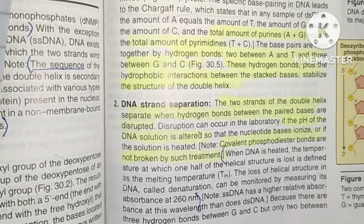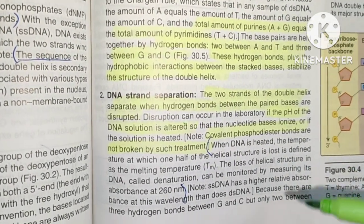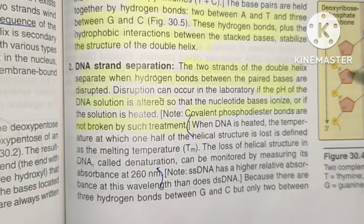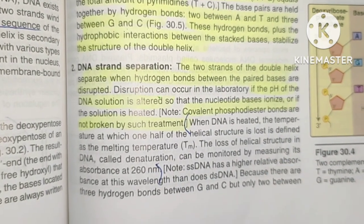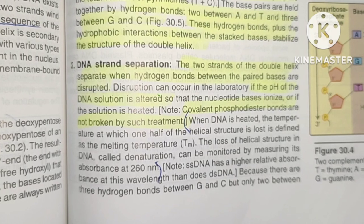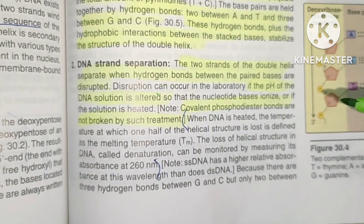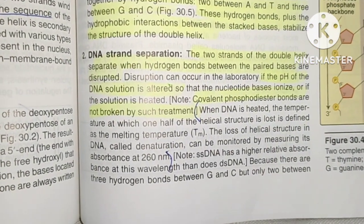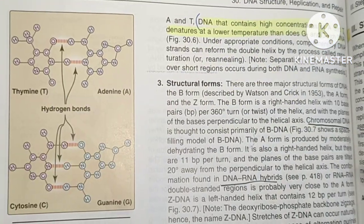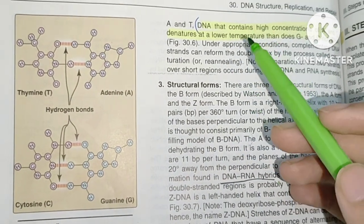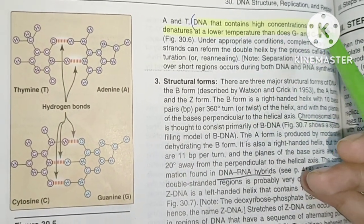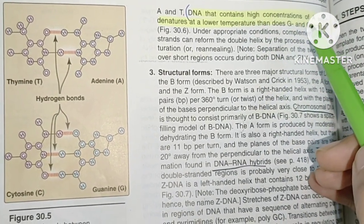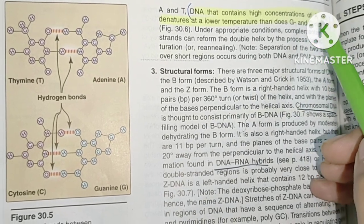When we heat DNA, the double helix is lost — this is called denaturation. When DNA is heated to the melting temperature (Tm), half of the double-stranded structure has separated. After denaturation, the DNA can re-form its double helix through a process called re-annealing. DNA with more GC content requires higher temperature for denaturation because G-C base pairs have three hydrogen bonds.